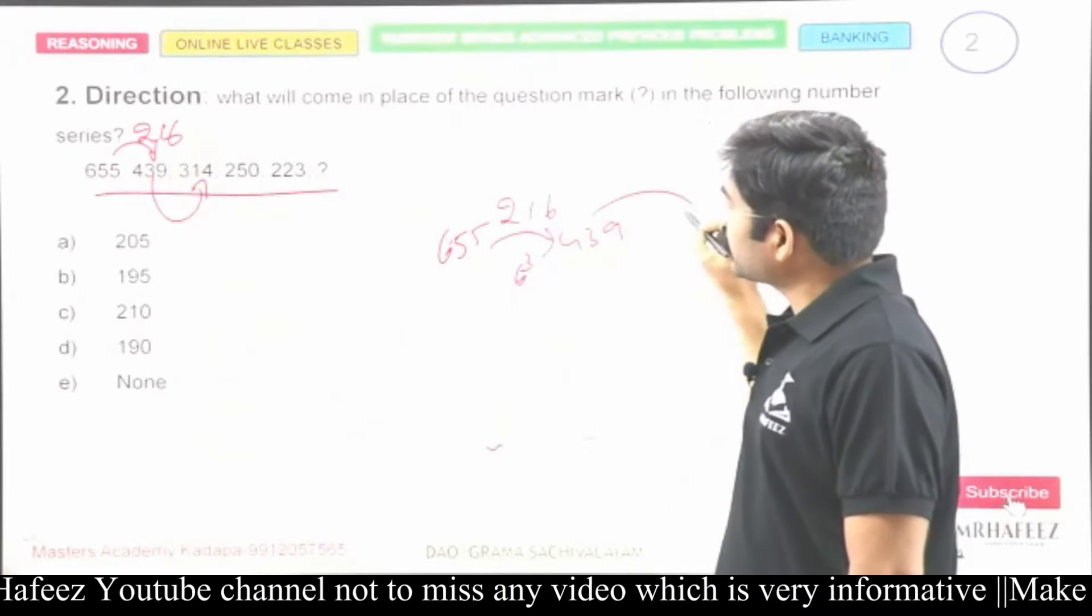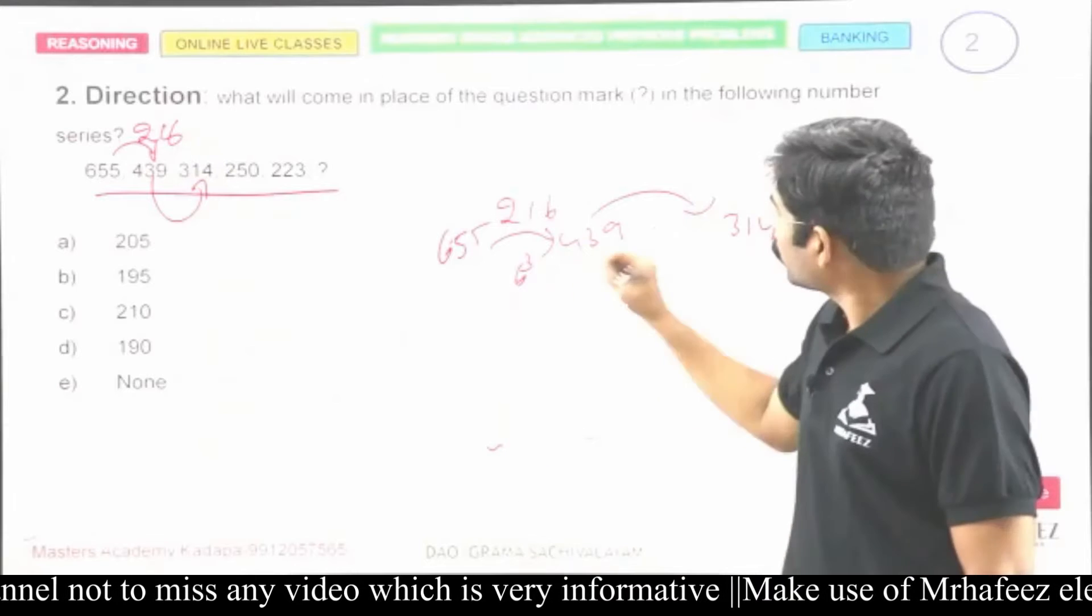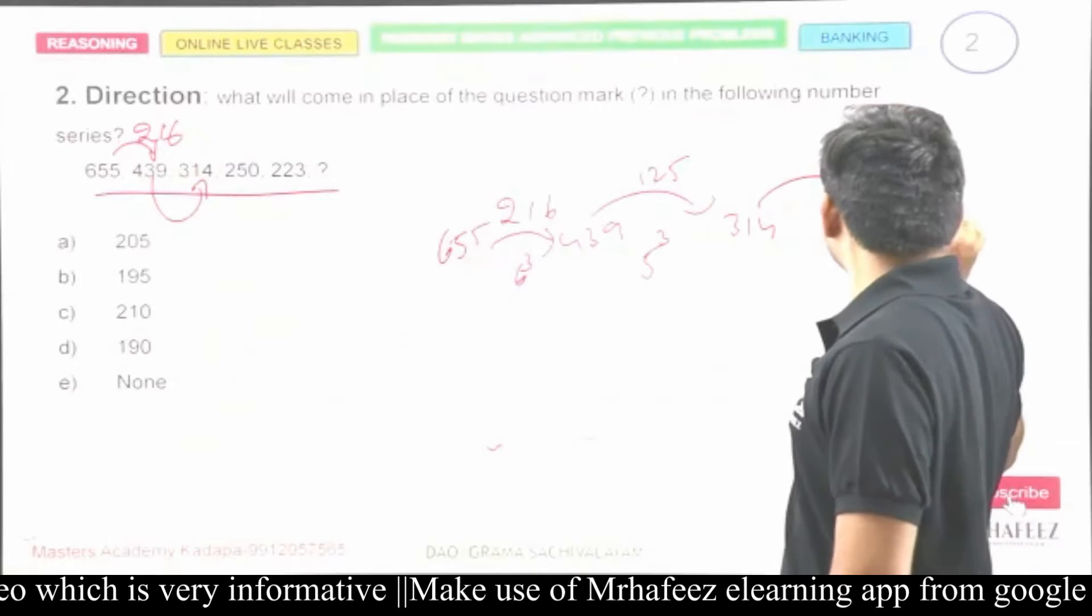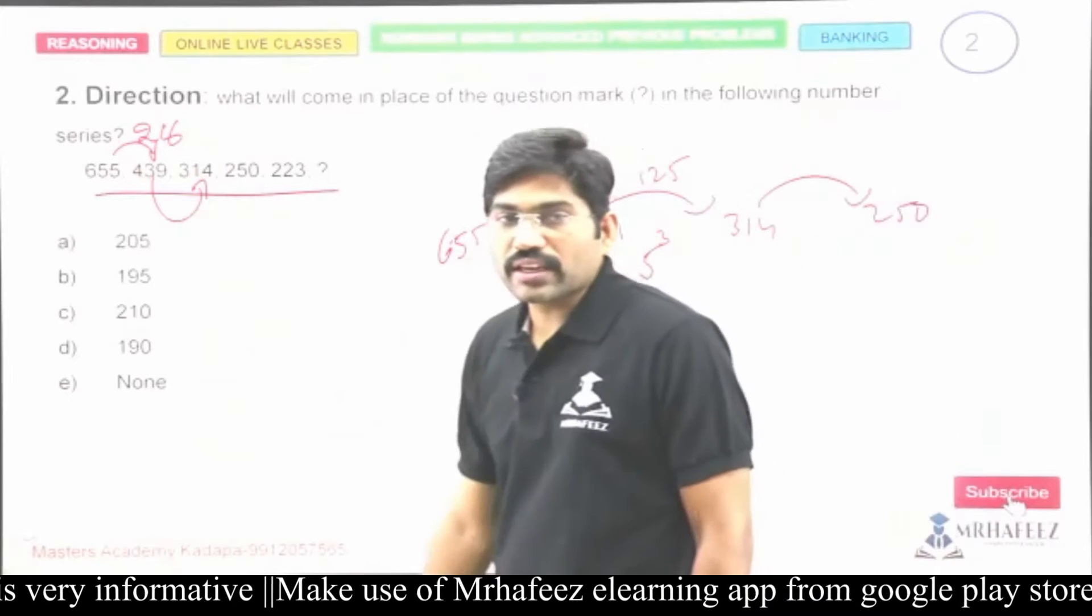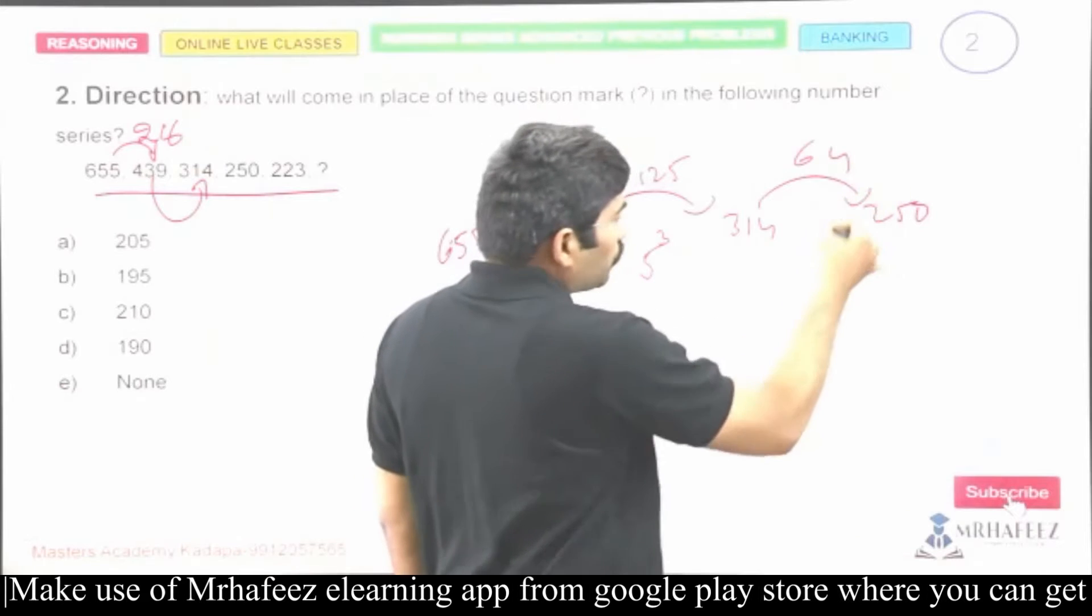And later it's three hundred and fourteen. The difference here is one twenty-five. One twenty-five is five cube. The next difference is between three forty and two fifty - the difference is sixty-four. Excellent, sixty-four is four cube.